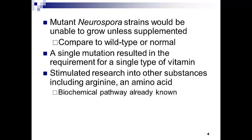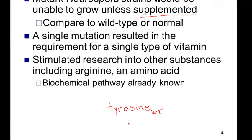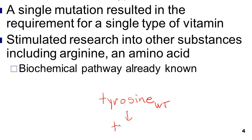They created a library of strains that are unable to grow under certain conditions unless supplemented. For example, the amino acid tyrosine — the wild-type mold was able to produce that amino acid all by itself using specific enzymes. They mutated it to produce organisms that are tyrosine-negative: unable to produce that amino acid, so you would have to supply it in the media for them to grow.